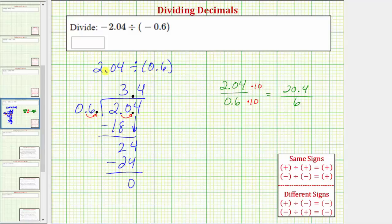So now we know that positive 2.04 divided by positive 0.6 equals positive 3.4, and therefore negative 2.04 divided by negative 0.6 is also positive 3.4.